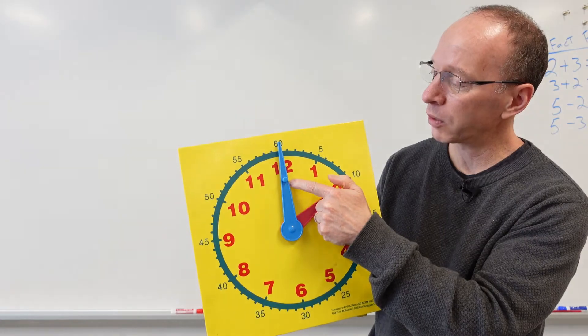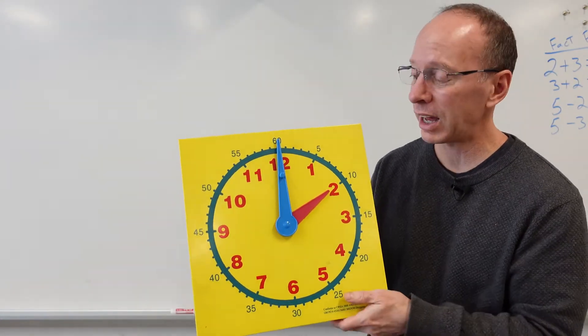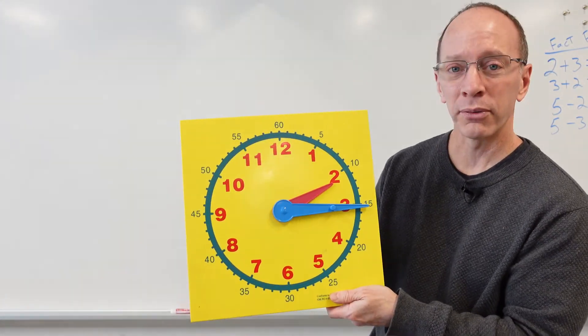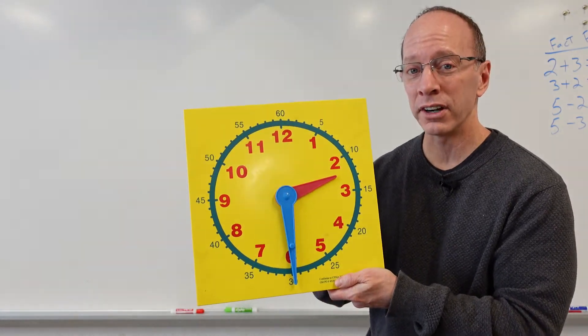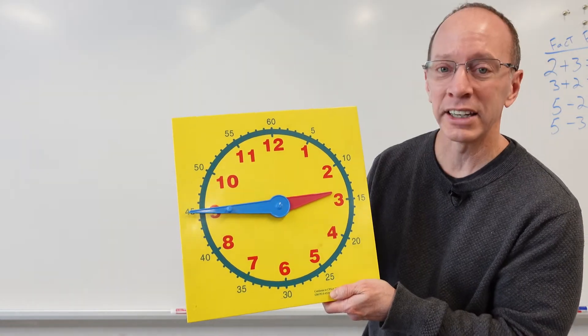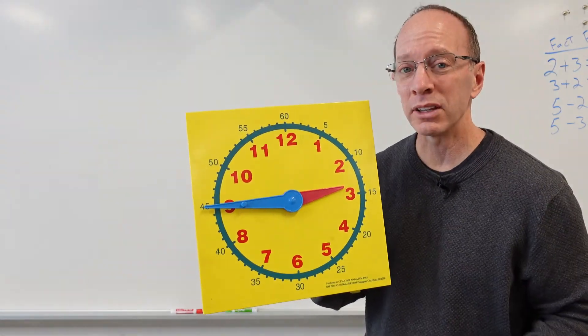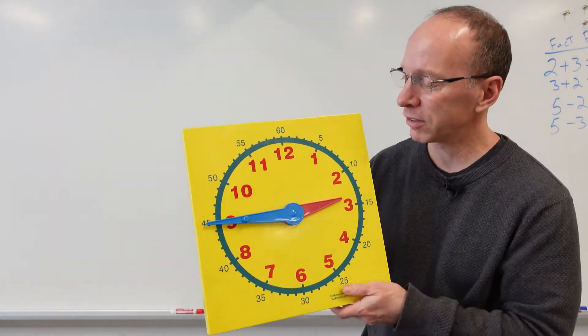So, once again, if this hand is pointing to the top, it's something o'clock. If it's pointing toward the 3, it's something 15. If it's pointing down, it's something 30. And if it's pointing toward the 9 right here, it's something 45. All right, let's give it a try here.